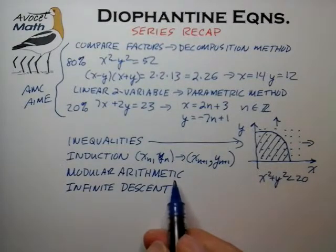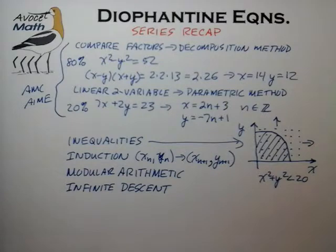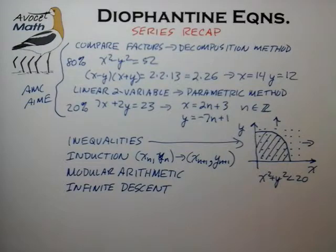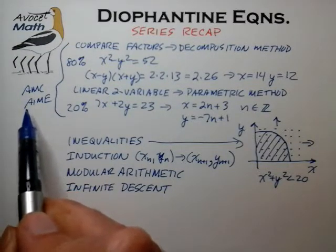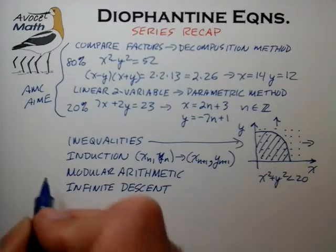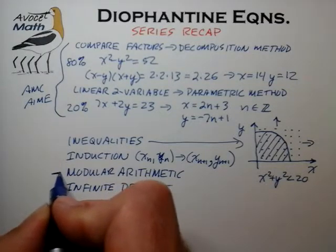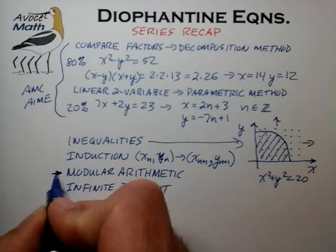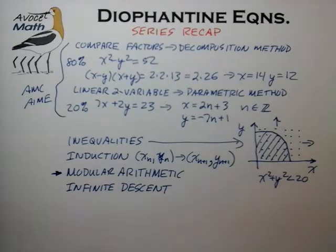Modular arithmetic pertains to analyzing numbers in terms of their remainders upon division by various other numbers. That's something not usually encountered in the AMC and AIME, but it does actually creep into a few AIME problems here and there, so it's something we should be aware of.